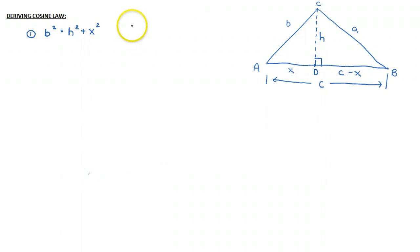The next thing I can say is I can say that X over B is equal to cosine A. And so therefore, I'm going to isolate for X and say X is B cosine A.